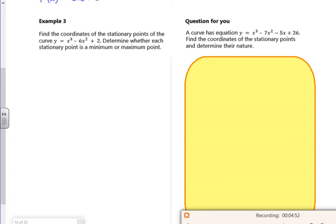Example 3 then. So, it says find the coordinates of the stationary points. So, we've done loads on stationary points now. So, the first thing I do for the stationary points is to do dy/dx. So, that'll be 3x² - 12x. I have to put a statement stationary when dy/dx is equal to 0.